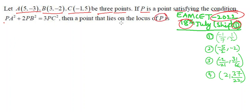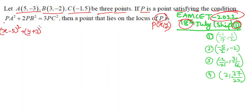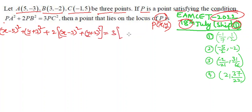Take locus: let any point P be (x, y). PA² means (x−5)² + (y+3)², plus 2 into PB² which is (x−3)² + (y+2)², is equal to 3 into PC² which is (x+1)² + (y−5)².